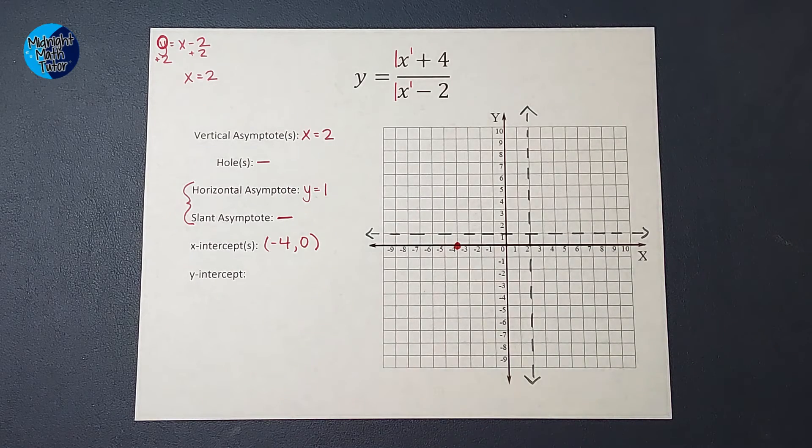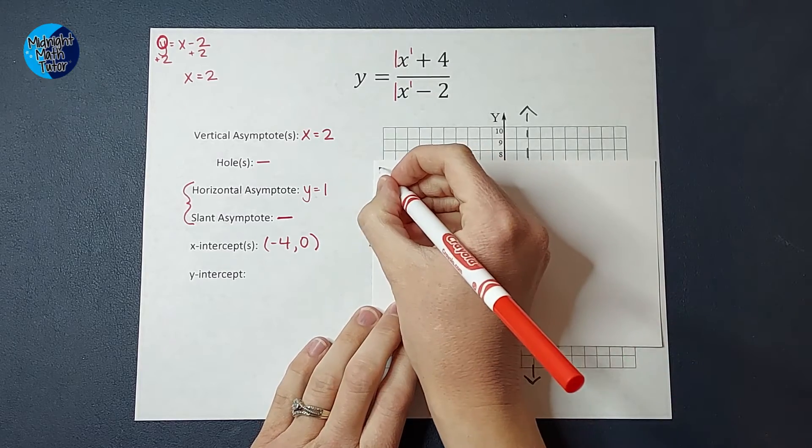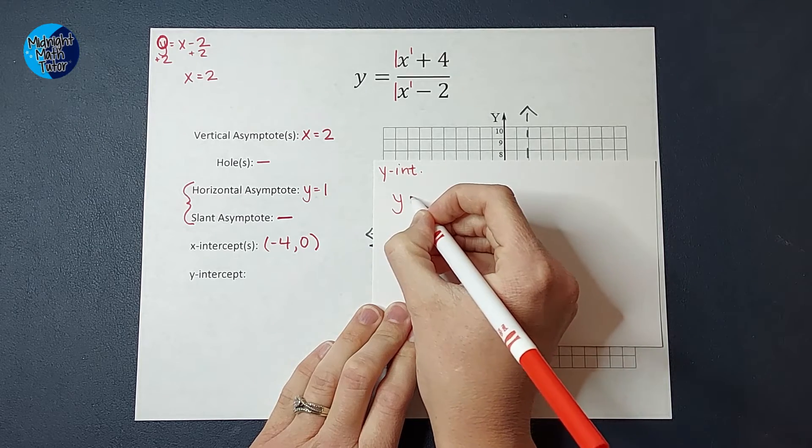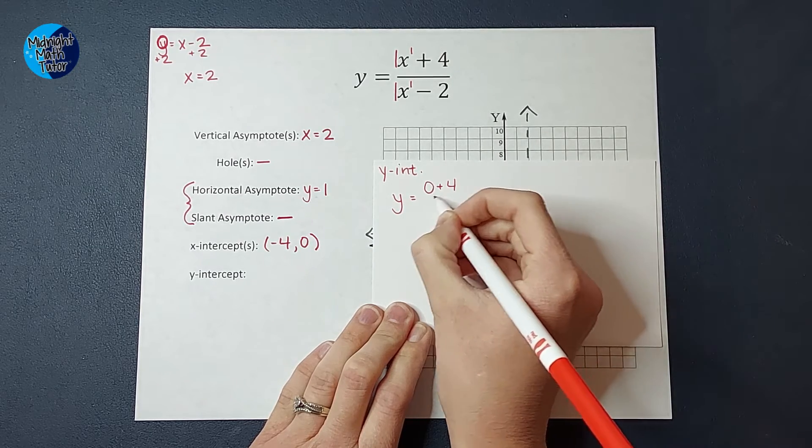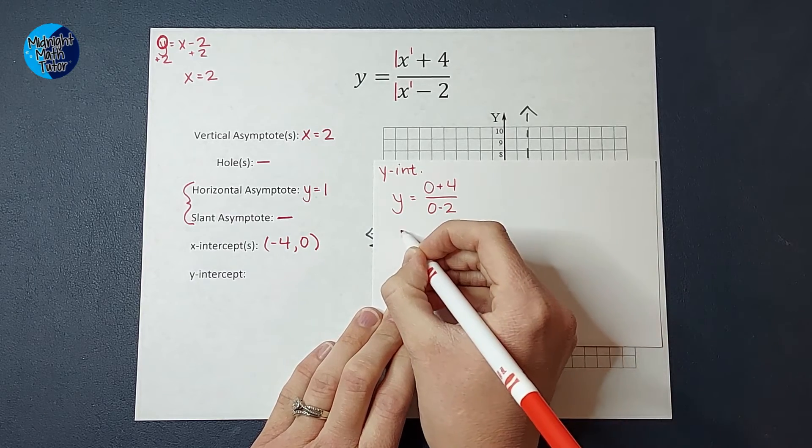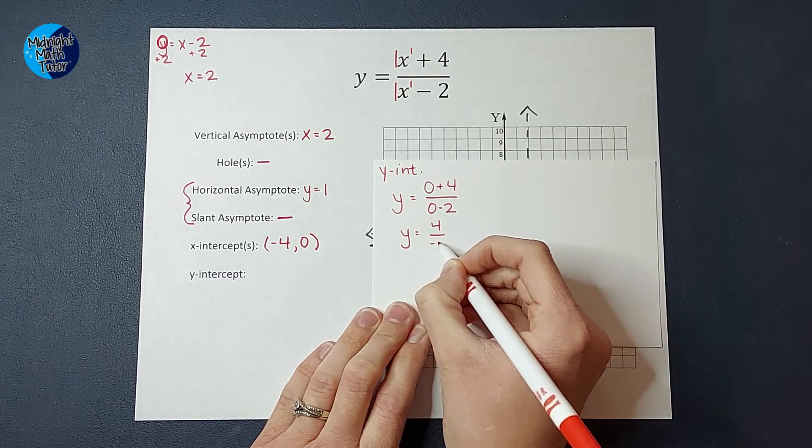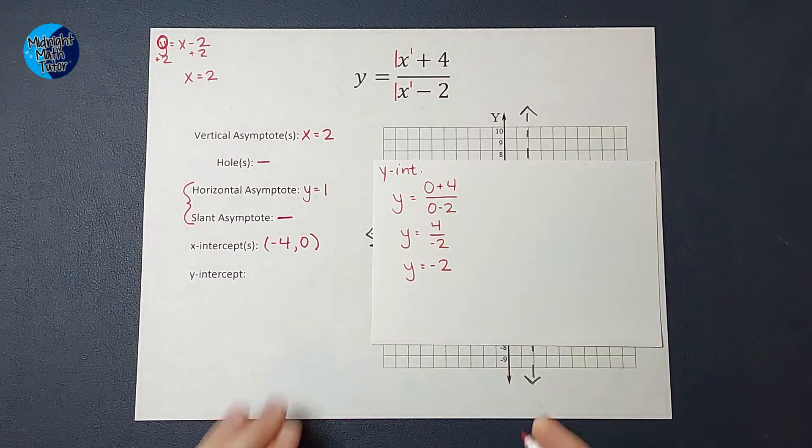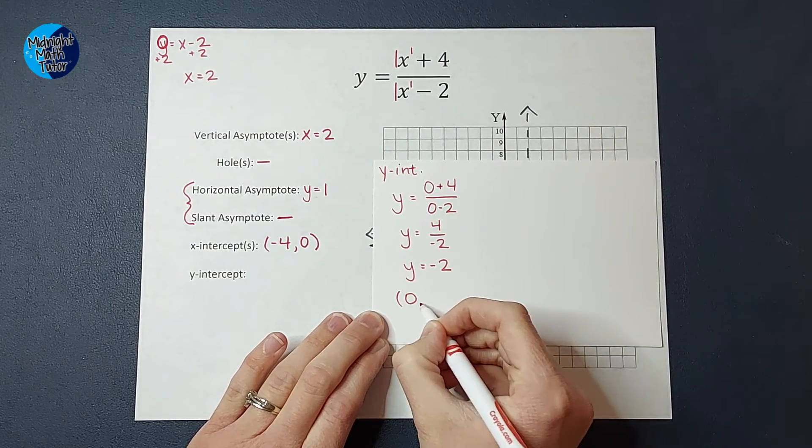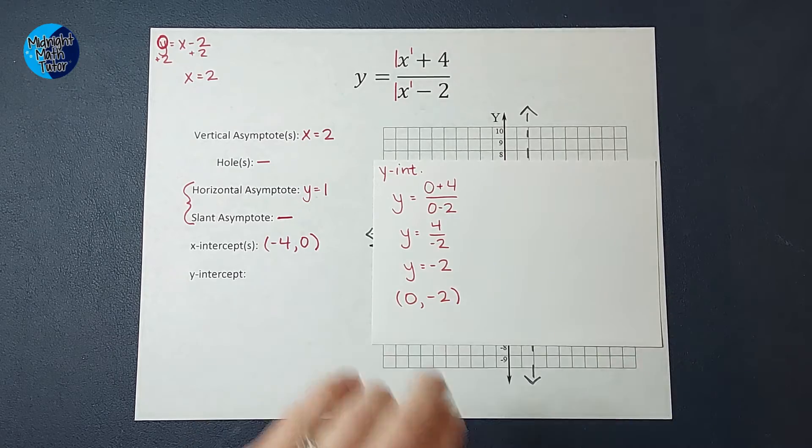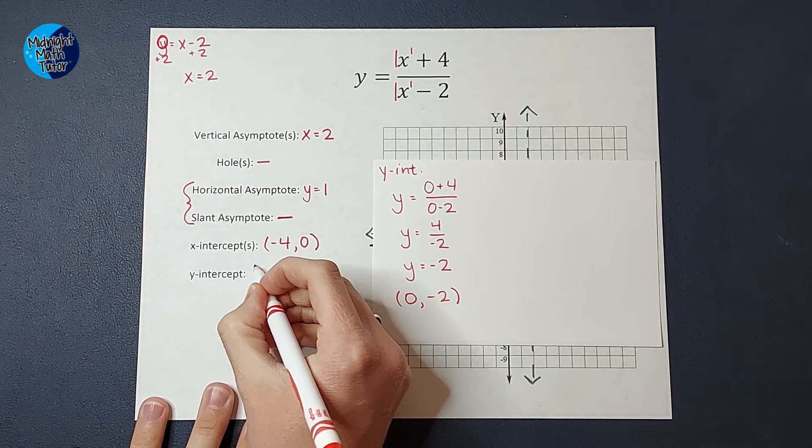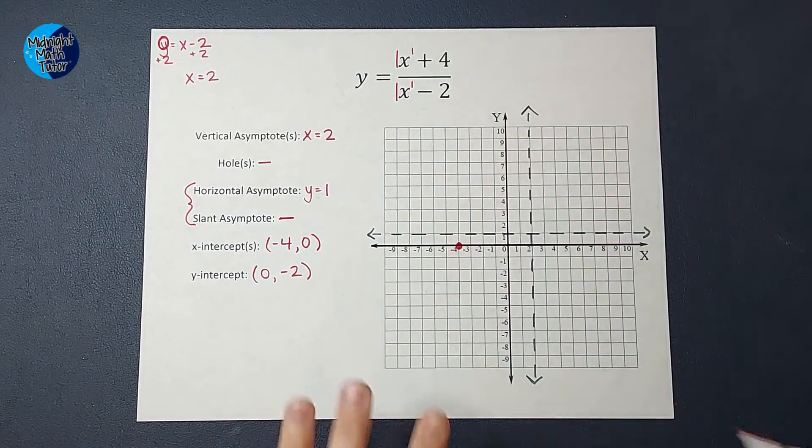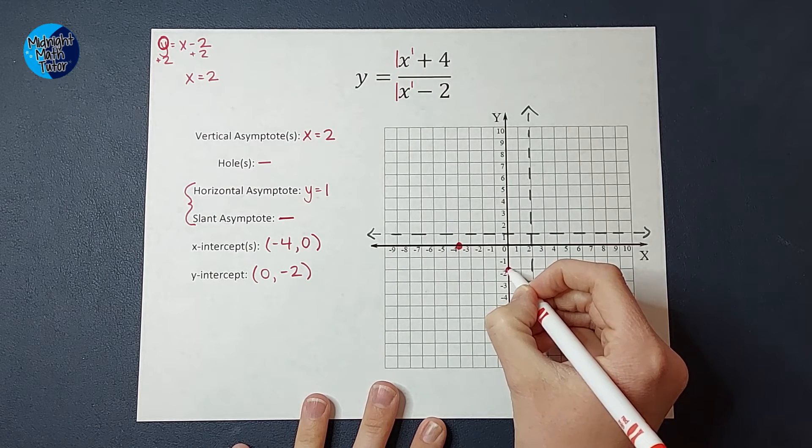Now let's look at our y-intercept. To find our y-intercept, you've probably done this a lot of times. We're going to plug in zero for x. So I'm going to have y equals zero plus four over zero minus two, which leaves me with four over negative two, which leaves me with negative two. Again, this is not a line, this is a point. When I plugged in zero for x, I got negative two for y. So I know my graph crosses at zero negative two.